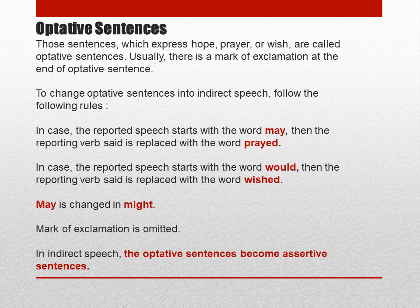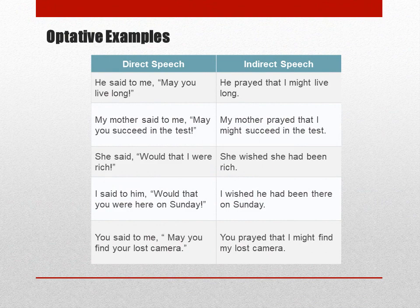The last type is optative sentences. Sentences which express hope, prayer, or wish are called optative sentences. Usually there is an exclamation mark at the end. In case the reported speech starts with 'may,' the reporting verb 'said' is replaced with 'prayed,' and 'may' changes into 'might.' In case the reported speech starts with 'would,' it changes into 'wished.' The exclamation mark should be omitted. In indirect speech, optative sentences also become assertive sentences. I have given some examples — please go through and solve them.